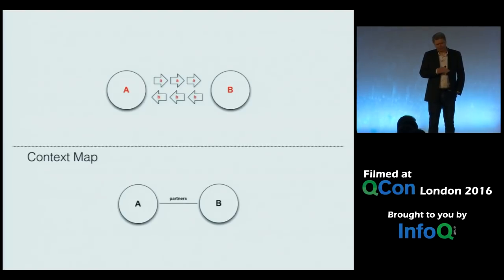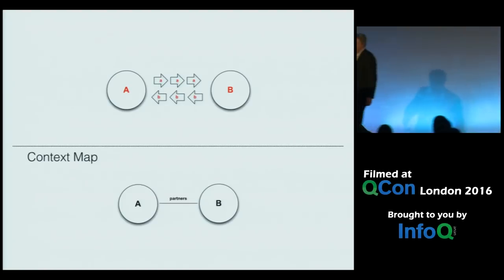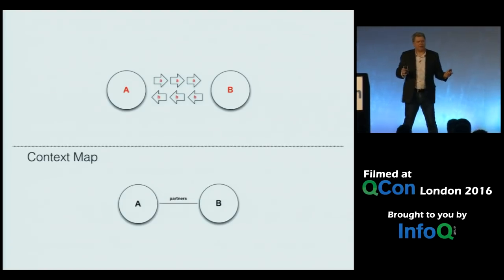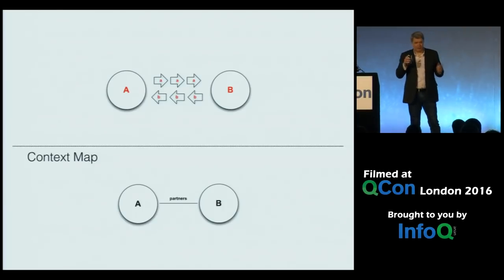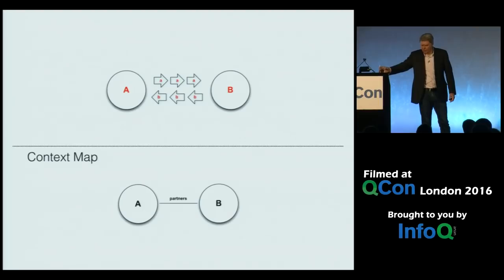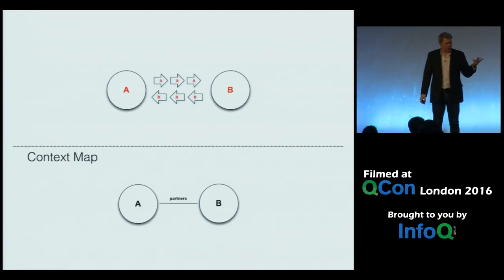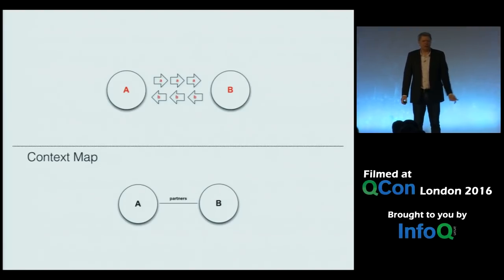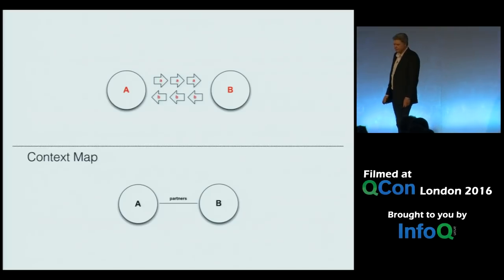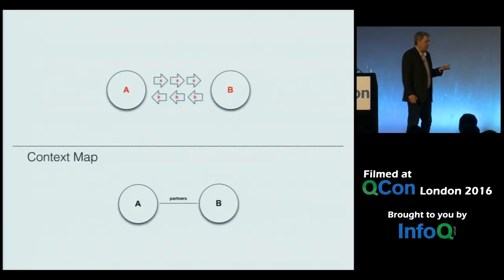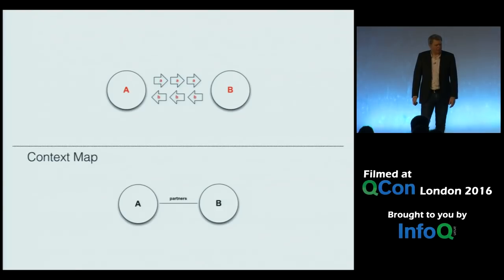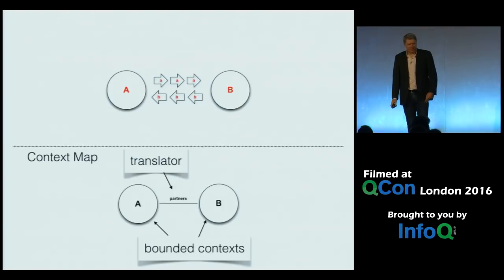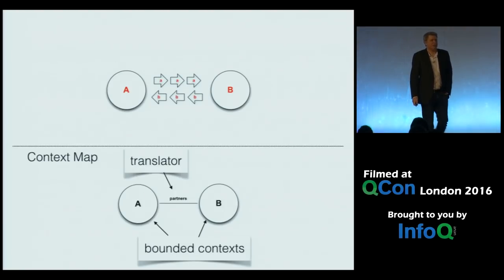That's what I call a bounded context, where you can metaphorically draw a line around some part of the system and say: within this part of the software, the word 'customer' always means the same thing — here's what it means. Sometimes software systems get into a mess and that's no longer really true. But when you can establish that, you can start to make sense of what's going on. Domain-driven design introduces a technique called a context map, where we get a big picture of a system by identifying the many bounded contexts in which a specific language is understood.